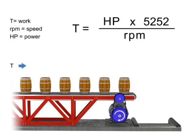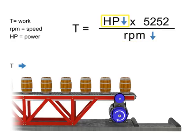Similarly, the opposite is true. If we wish torque to remain constant and decrease speed, then the horsepower of the motor also decreases.